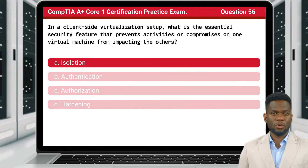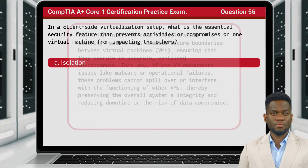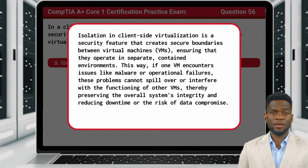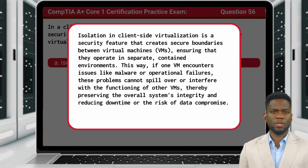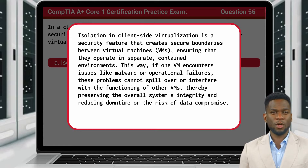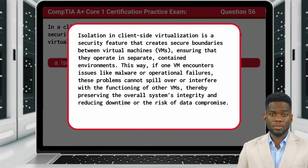The answer is A: Isolation. Isolation in client-side virtualization is a security feature that creates secure boundaries between virtual machines, ensuring that they operate in separate, contained environments. This way, if one VM encounters issues like malware or operational failures, these problems cannot spill over or interfere with the functioning of other VMs, thereby preserving the overall system's integrity and reducing downtime or the risk of data compromise.